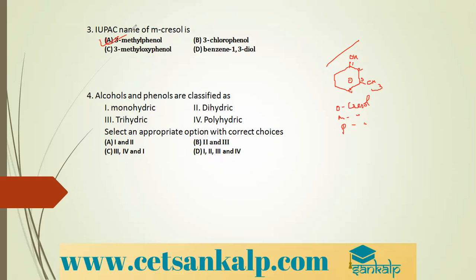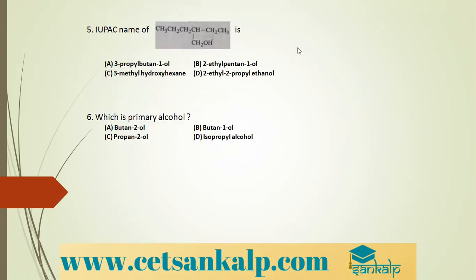Alcohols and phenols are classified based on the number of hydroxyl groups they contain — one, two, three, or many. So they can be classified as monohydric, dihydric, trihydric, and polyhydric alcohols or phenols. The correct answer is option D: all of them are correct.